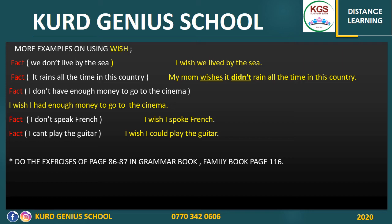Another sentence — 'I don't speak French.' This is the fact. I only speak Kurdish and English. This sentence is negative, so when using wish, you change it to positive with past simple: 'I wish I spoke French.' Or you can say, 'I wish I could speak French.' But in fact, I don't speak French. So when using wish, change the verb to the past form.